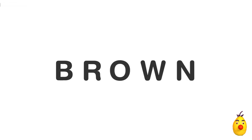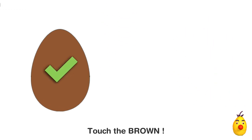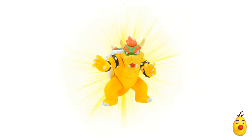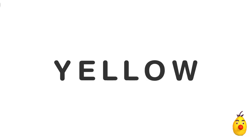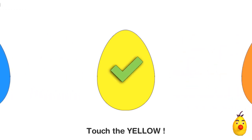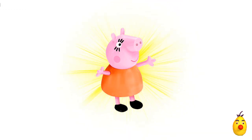B, R, O, W, N — Brown. Touch the brown egg. Where is the yellow egg?